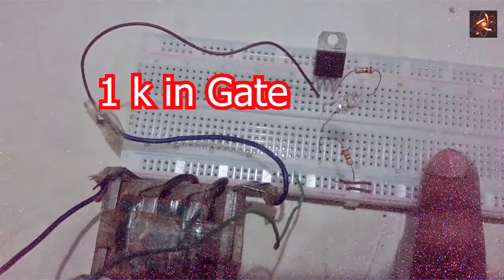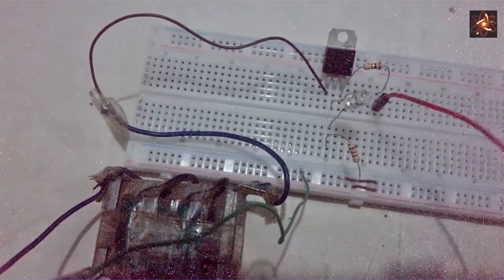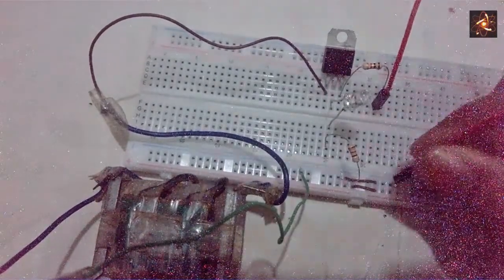Also, one 1K resistor is connected to gate pin to limit the gate current. And wire is connected with the opposite side of the resistor.